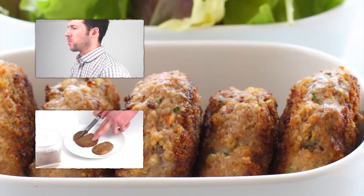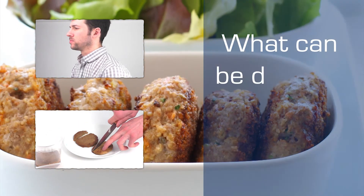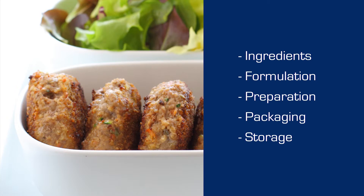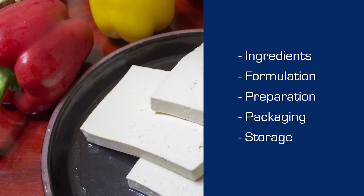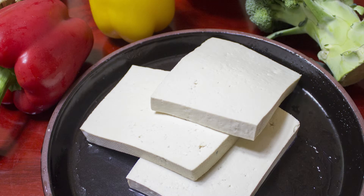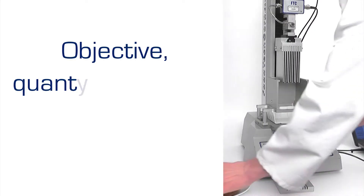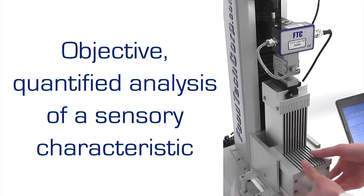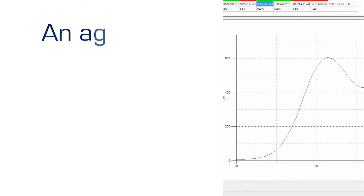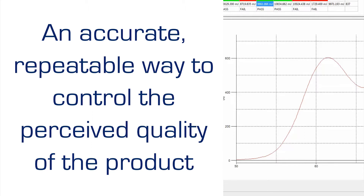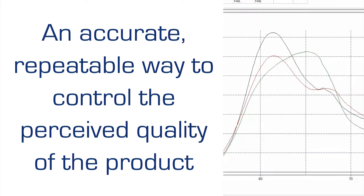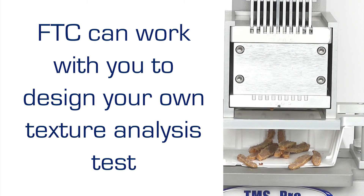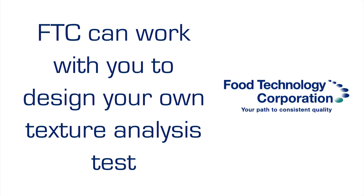With an accurate and repeatable texture analysis capability, the producer of reconstituted meat products, or alternatives requiring a comparative texture, can confidently measure the effect of changes to ingredients, formulation and preparation, making recommendations for packaging and storage. A texture analyser enables objective, quantified evaluation of sensory characteristics for an accurate and repeatable way to control the perceived quality of the product. Food Technology Corporation can work with you to design fixtures and develop test methodologies to meet your own unique requirements and quality standards, to control burger texture and compare meatiness.